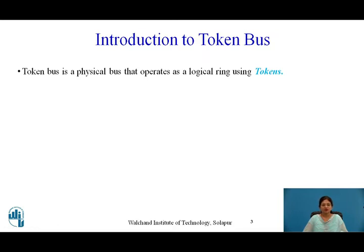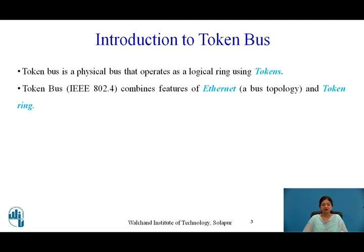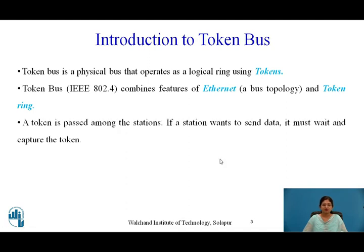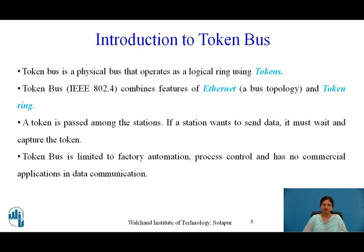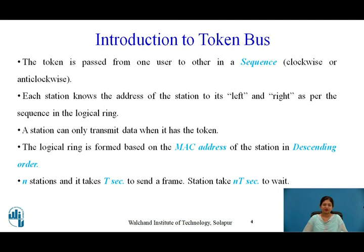The Token Bus is a physical bus that operates as a logical ring using a token. A token is a special frame format. Token Bus combines the features of Ethernet and Token Ring. A token is passed among stations; if a station wants to send data, it must wait and capture the token first before it can transmit. Token Bus is limited to factory automation and process control and has no commercial application in data communication.